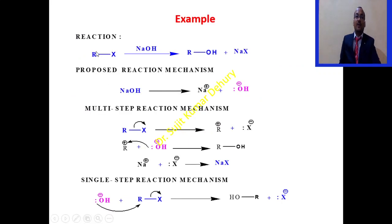When we take one example, R-X in the presence of reagent sodium hydroxide, it would give rise to alcohol ROH plus NaX. This is the proposed reaction mechanism. Sodium hydroxide we know is an ionic compound, so that gives rise to Na plus and OH minus.